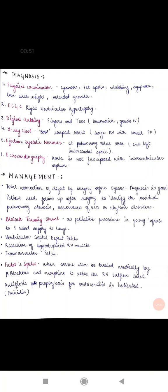Tet spells or we can say Fallot spells, these are hypercyanotic episodes that means hyper cyanosis that takes place in the baby's body after any exertion, feeding or crying. Clubbing of fingers, that is hypertrophy of the nail bed, dyspnea, shortness of breath, low birth weight due to poor feeding and retarded growth due to poor oxygen.